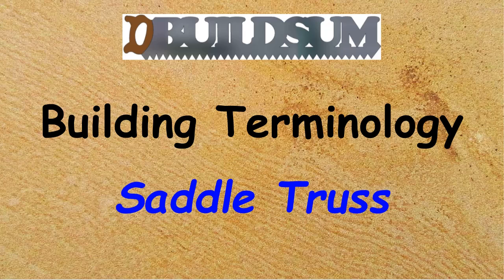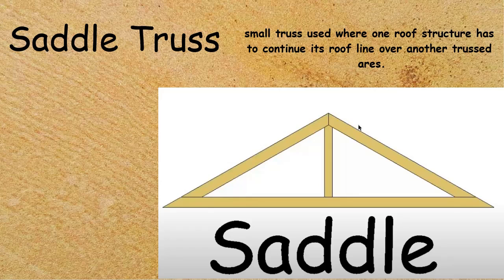This time on building terminology: the saddle truss. The saddle truss is a small truss, or normally a series of small trusses, that are used where one roof structure has to continue its roof line over another truss area.